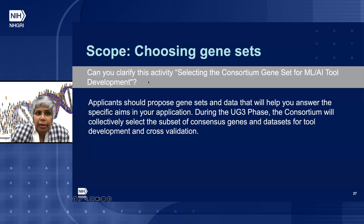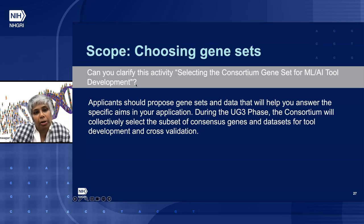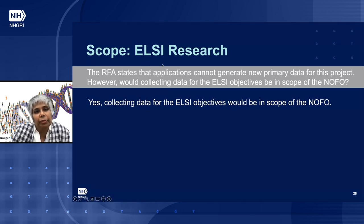Can you clarify selecting the consortium gene set? Applicants should propose gene sets and data that will help answer their specific aims. During the UG3 phase, the consortium will collectively select the best subset of consensus genes and data sets for tool development and cross-validation based on meeting NOFO goals. Regarding LC research: the RFA states applications cannot generate new primary data, but could collecting data for LC objectives be in scope? Yes, this would be in scope.